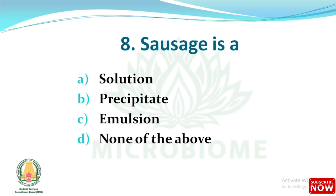Next question: sausage is which of the following? The options are solution, precipitate, emulsion, and none of the above. The right answer is option C: emulsion.